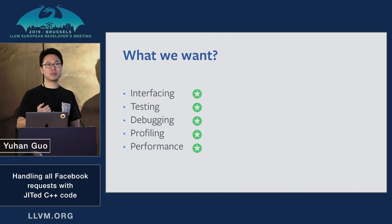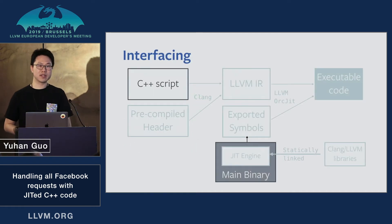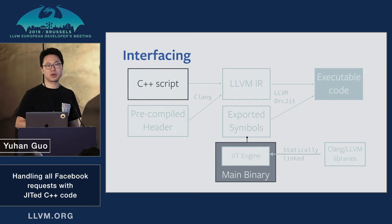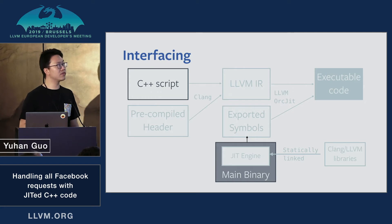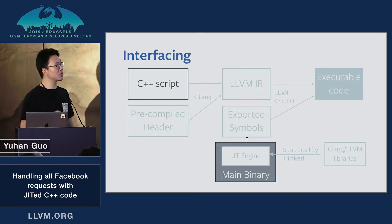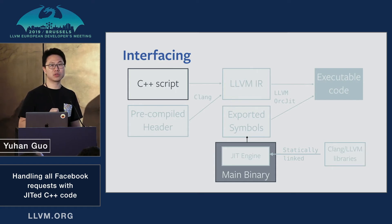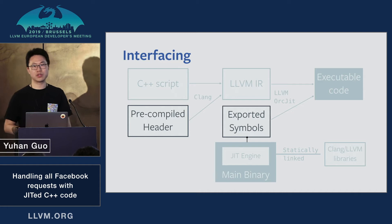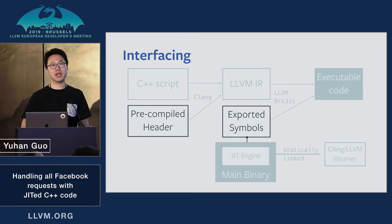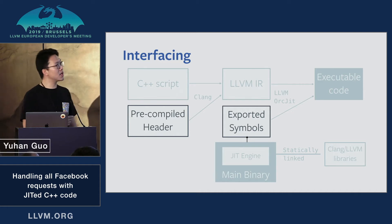Does this solve all the problems we wanted to solve? In terms of interfacing, because both the main binary and the script are implemented in the same language — C++ — a lot of great functionalities and utility classes are naturally exposed to developers to use in the scripting layer. We only need to add minimal glue code. But are we giving developers too much power? We actually have control in two different ways: at compile time and at link time.